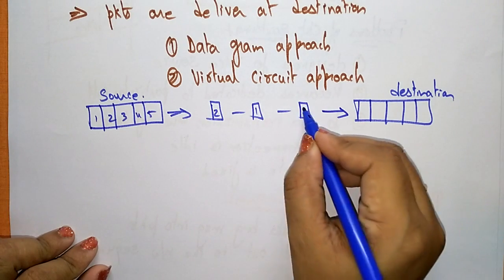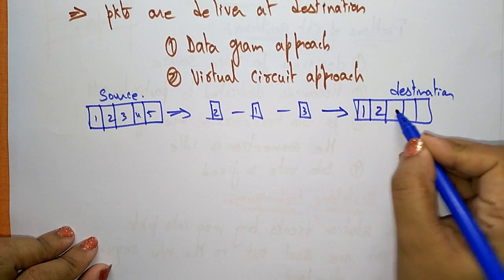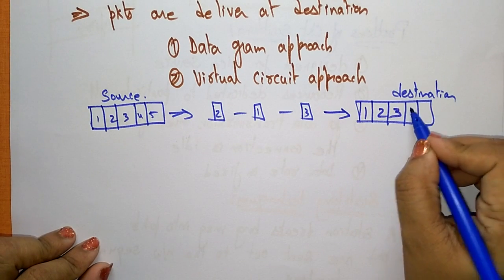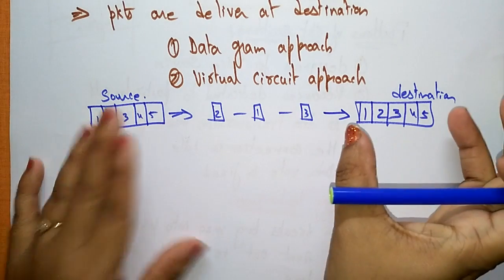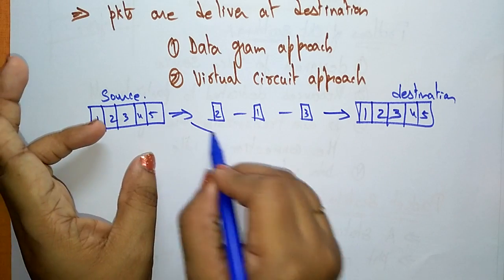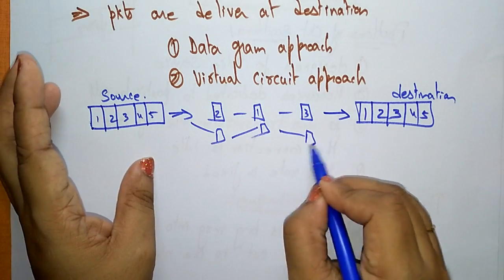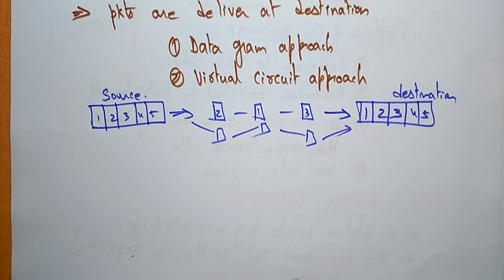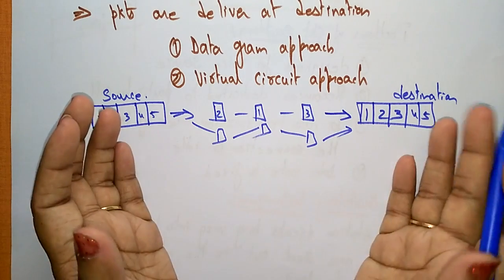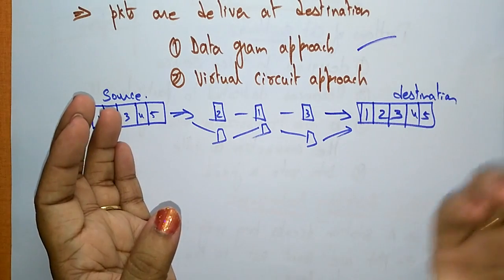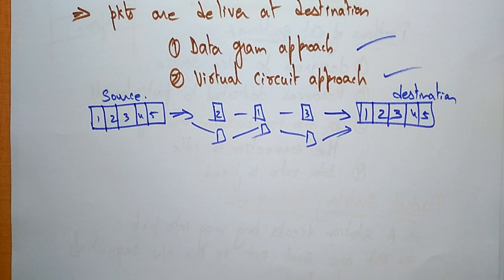The packets may travel in different orders — suppose packet 2 goes first, then 1, then 3 — but at the destination they must be accepted in sequential order. So whatever the source sends, the destination will receive the same message. In between, the packets can travel in different paths, and to do so they can follow either the datagram approach or the virtual circuit approach.